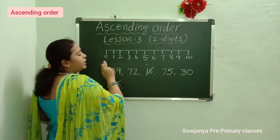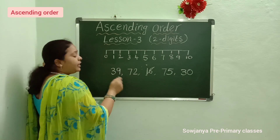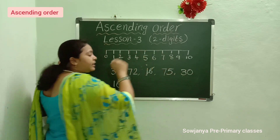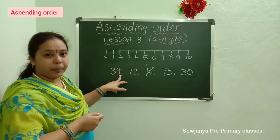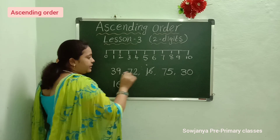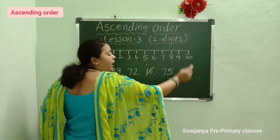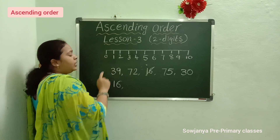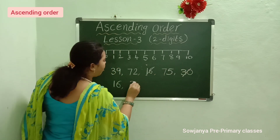3 is the small number. But here with 3 we have two numbers — 39 and 30. Then what we have to do? We have to check the 1's place. In the 1's place, 9 is there and 0 is there. Then which is the small number? 0 is the small number. So 30 is the small number. Very good. 30 is the small number.